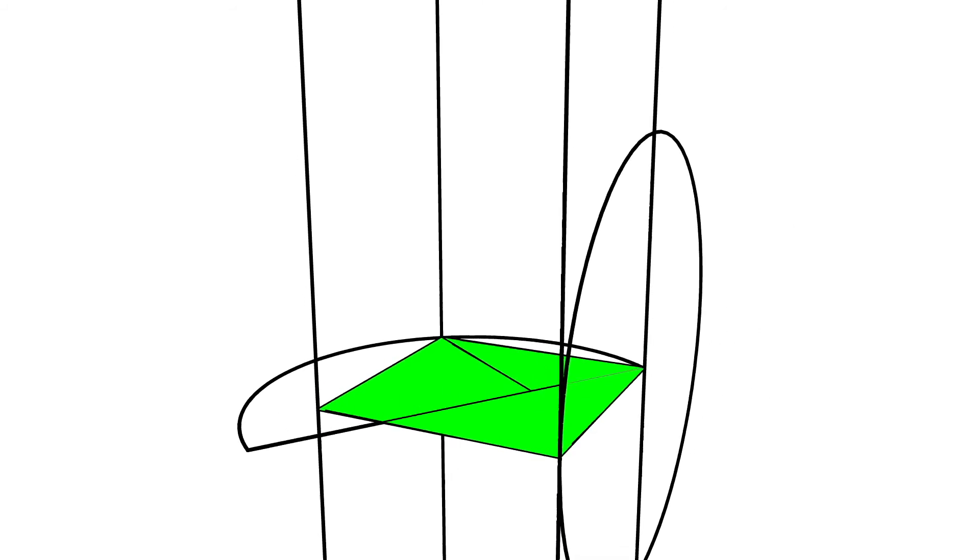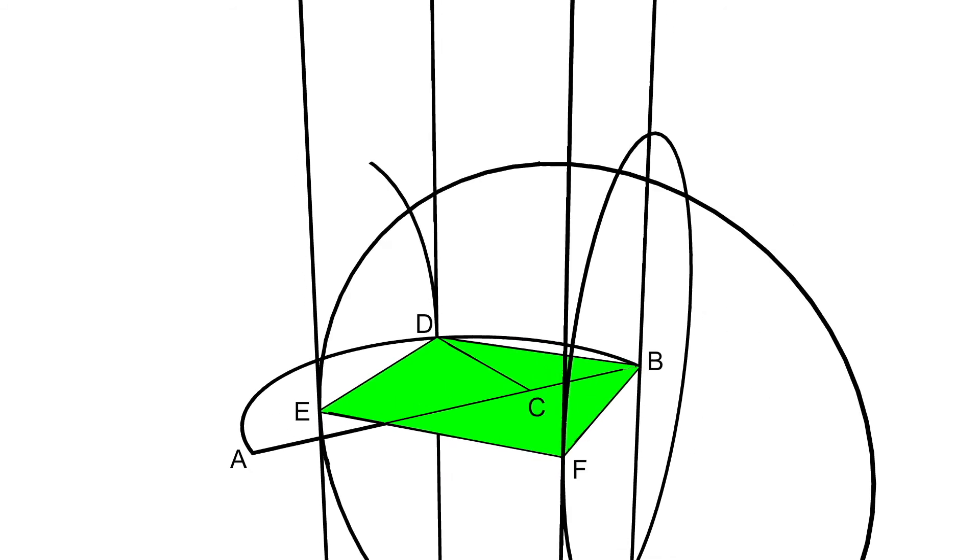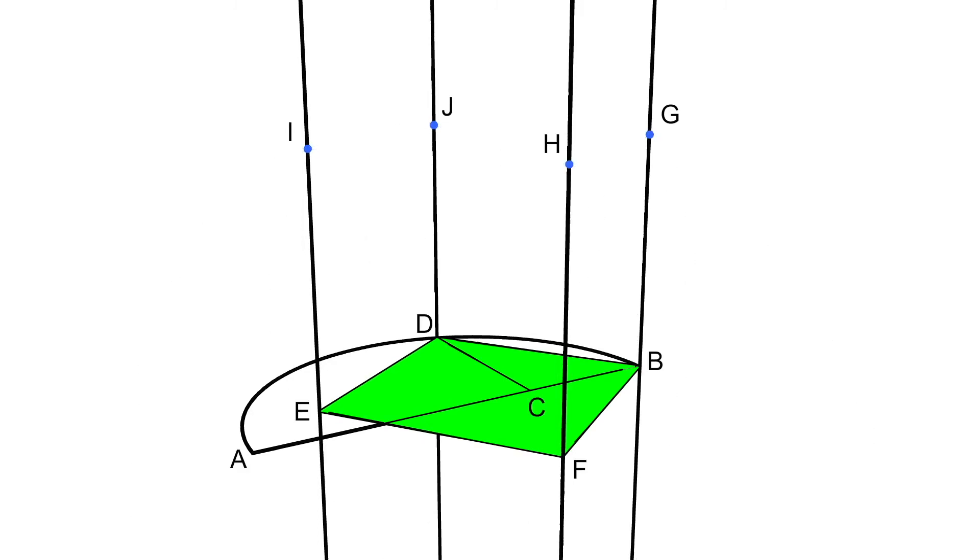We'll repeat this construction on the other three sides of the square. So this results in the intersection points G, H, I, and J.